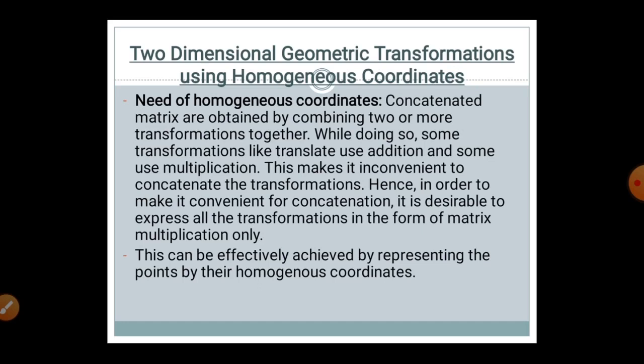Now, coming back to two-dimensional geometric transformation using the homogeneous coordinate system. First, what is a coordinate system? A coordinate system is anything correlated with the x, y, z axis system, called coordinates. There are types of coordinate systems — the local coordinate system and the global coordinate system — and both also relate to the homogeneous coordinate system.